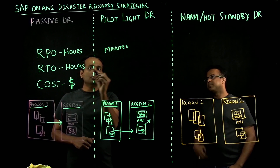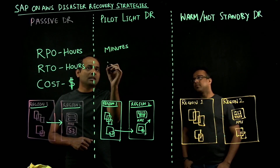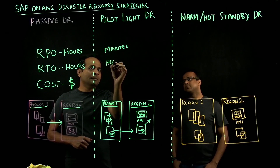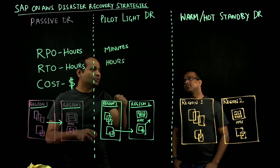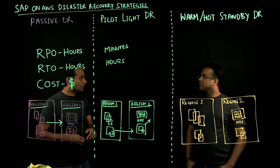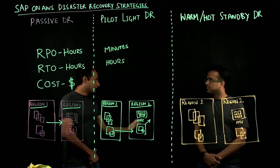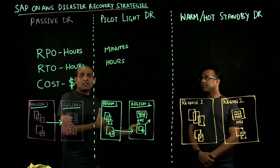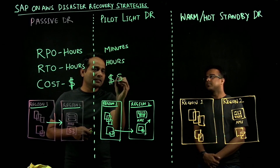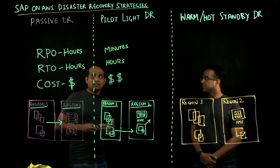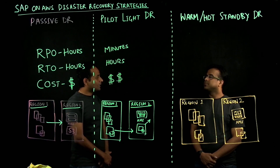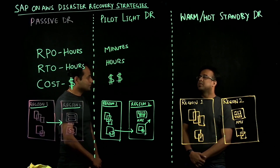This will help you reduce your RTO from hours to a few hours, depending on how you plan and the automation you are using. When it comes to cost, cost is going to be slightly more than your passive DR, because you are consuming compute and storage compared to the first pattern.